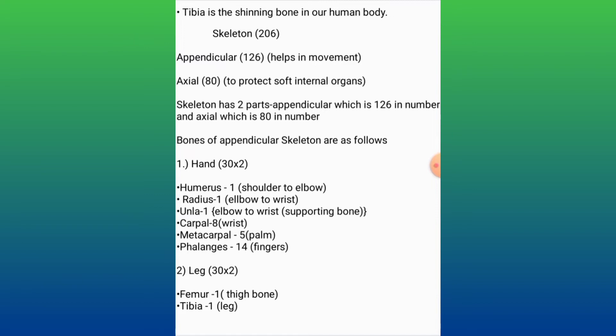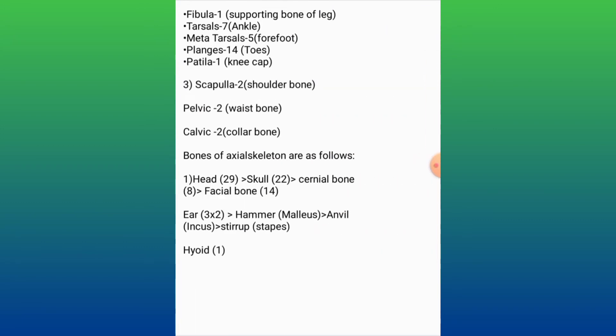Leg bones: femur 1 (thigh bone), tibia 1 (leg), fibula 1 (supporting bone of leg), tarsals 7 (ankle), metatarsals 5 (forefoot), phalanges 14 (toes), patella 1 (kneecap). We have two legs, so we multiply by 2.